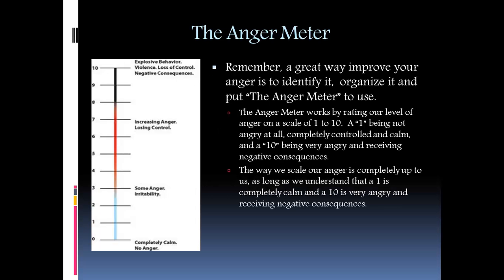So hopefully we're beginning to really become aware of the cues and really being aware of how we think about anger. We know what tools we have and what tools we prefer most. To review the anger meter: remember, a great way to improve your anger is to identify it, organize it, and put the anger meter to use. That explosive phase is not until we reach nine or ten. We want to keep our anger at four, three, two — breathe and bring it back down to one. We don't want to get higher than that. We don't want to be in that red zone.